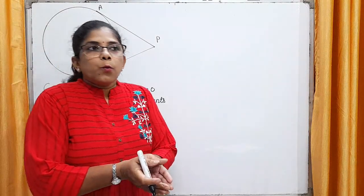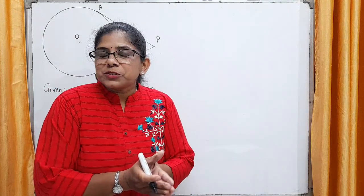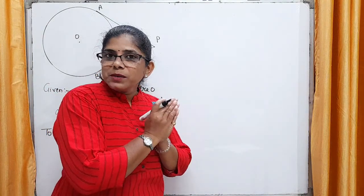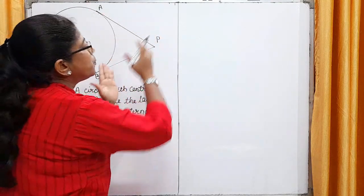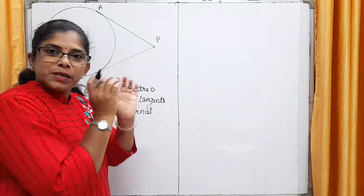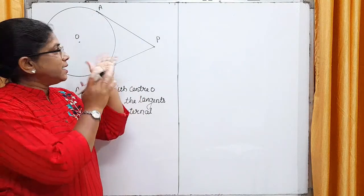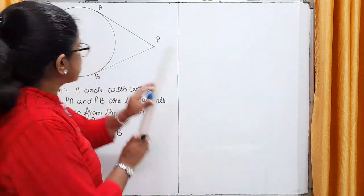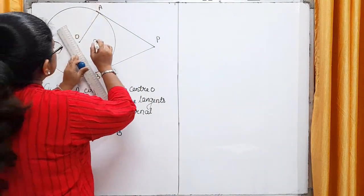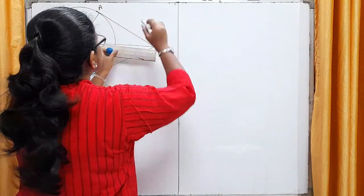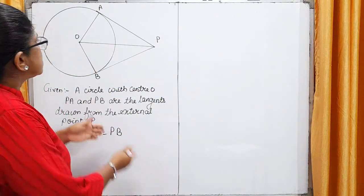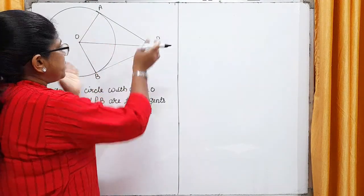Now, again this is not possible without one simple construction. What construction we have to do here? Join OA, OB and OP. Okay, so this simple construction we have to do here. Let's join this. So, we have joined OA, OB and OP.